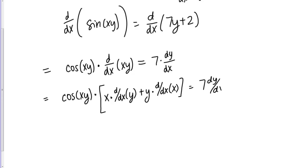What does that give us? We have x times the derivative of y. The derivative of y is dy/dx or y prime if you'd like to write it that way. Plus y times the derivative of x. The derivative of x with respect to x is just 1. This is just plus y. Equals 7 dy/dx.